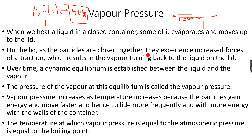The pressure exerted by the steam at equilibrium is called vapor pressure — it's called vapor pressure because the steam is exerting pressure on the walls of the container. As you increase temperature, vapor pressure increases because the forward reaction is endothermic, and an increase in temperature favors the endothermic side. The equilibrium shifts to the right, more vapor forms, and so the vapor pressure increases.